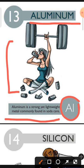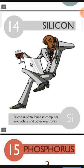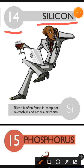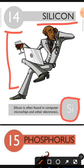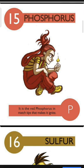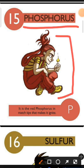Element number 14 is Silicon. The characteristic of Silicon is: Silicon is often found in computer microchips and other electronics. Element number 15 is Phosphorus. The characteristic of Phosphorus is: red phosphorus is used in match tips which makes them ignite.